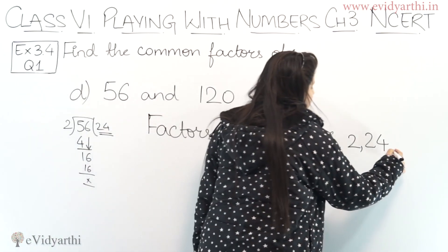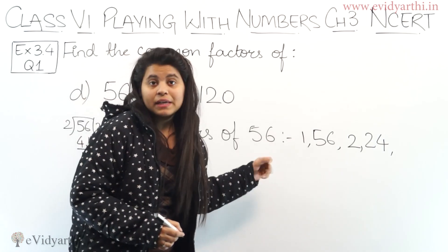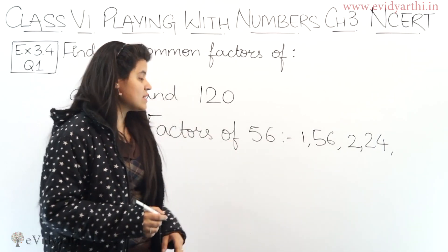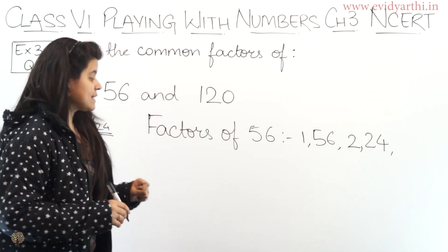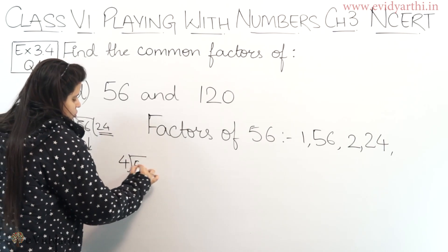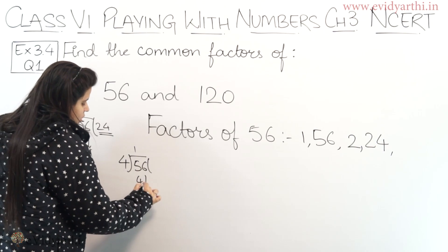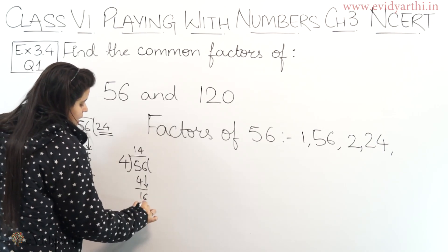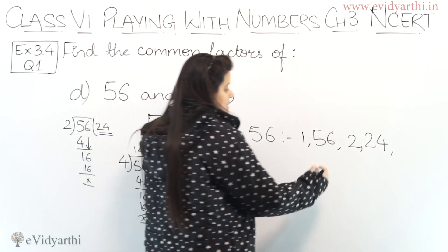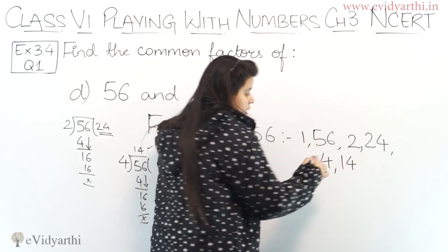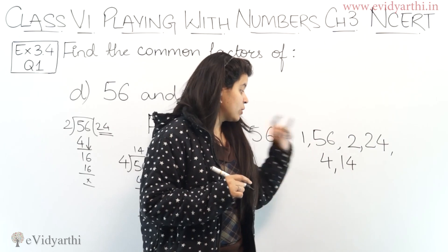Moving forward: checking 3 — adding the digits of 56 gives 11, so 3 is not divisible. Checking 4: 4 divided into 56 gives 14, so 4 into 14 is 56 — both 4 and 14 are factors. Then 5 is not a factor. 6 is not a factor. But 7 into 8 is 56, so both 7 and 8 are factors of 56.